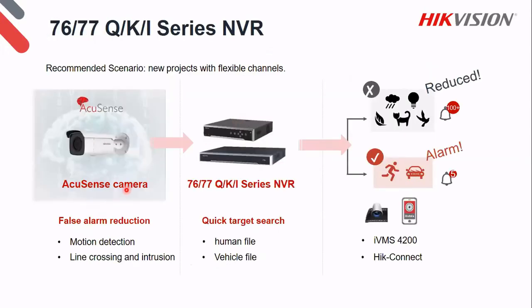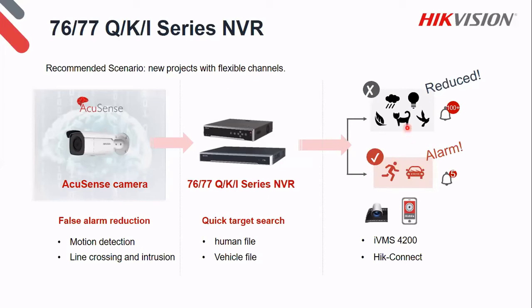You can also use AccuSense cameras with a normal NVR — it doesn't have to be an AccuSense NVR. The number of AccuSense cameras determines the number of AccuSense channels. You can replace a few traditional IP cameras with AccuSense cameras at key points, and they'll do the AccuSense classification on motion detection or line crossing and intrusion detection. Push that to a normal NVR and it will actively give you alarms on human and vehicle triggers, or you can do a passive quick target search afterwards. These alarms can come through IVMS 4200, eConnect, or eCentral. The whole point is to get rid of false alarms and focus only on real alarms.